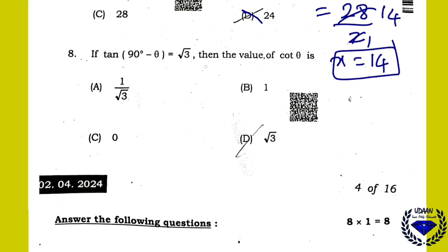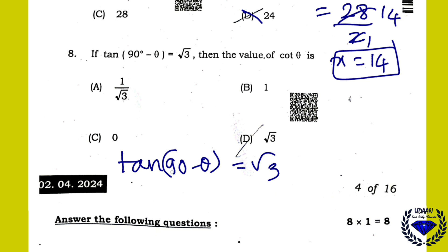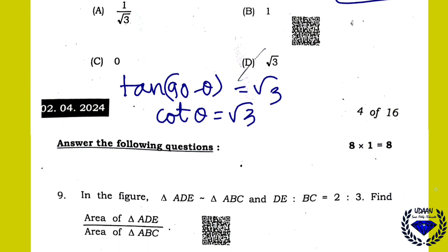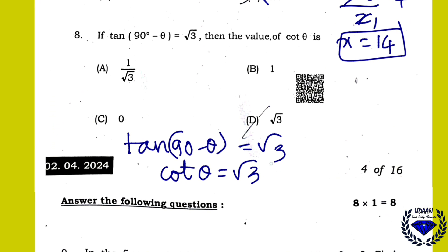Question 8: tan(90° − θ) = √3. You know that tan(90° − θ) = cot θ, so cot θ = √3. They asked for cot θ, so the answer is √3. Option D is correct.